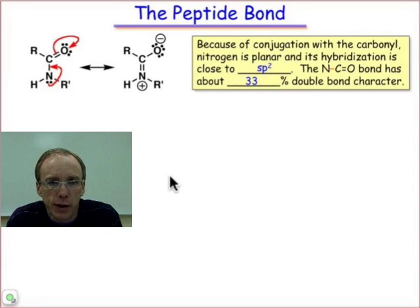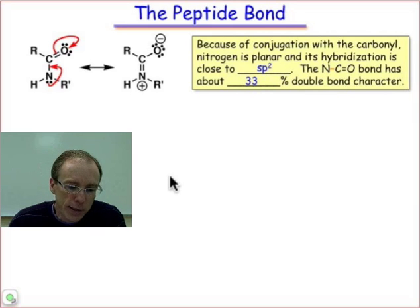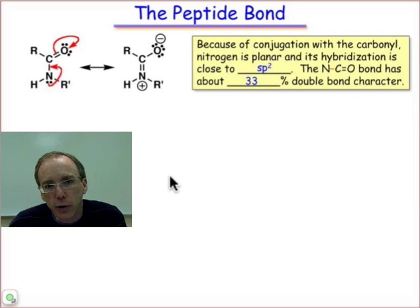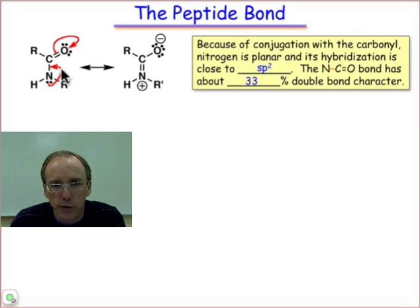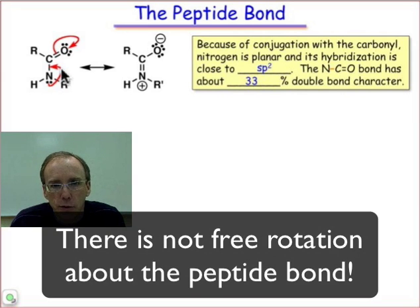The peptide bond is an amide functional group that links adjacent amino acids. In this webcast, we're going to learn that that linking group is a rigid planar entity and has some important consequences in limiting the degrees of freedom in a polypeptide chain.